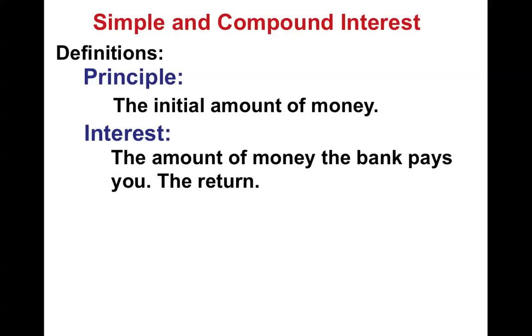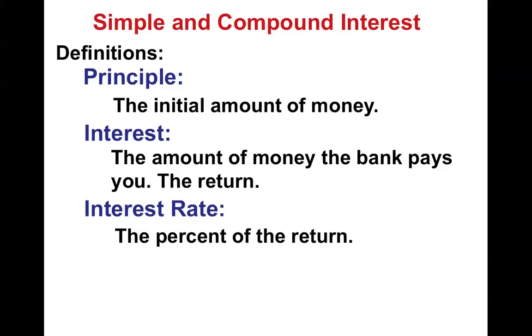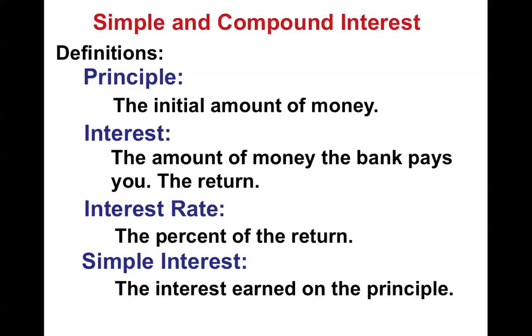The interest is the amount of money the bank pays you over time, or the amount of money you pay the bank over time, depending on who borrowed the money. We call this the return. The interest rate is the percent of the return, 3%, 5%. And the simple interest, that's the interest earned on the principle, or the amount of interest that you had to pay, depending on if you borrowed the money or if you gave someone else the money.